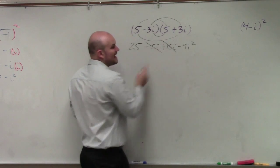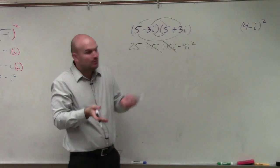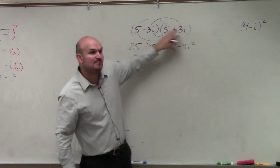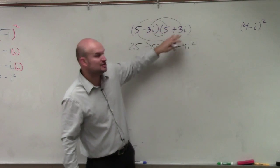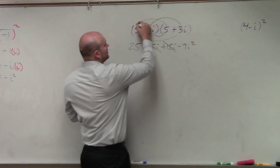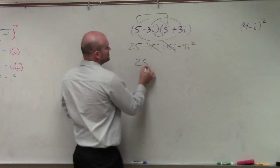So those add to zero. So in reality, when you see something like this, where it's exactly the same, but one's subtraction, one's addition, all you can simply do is multiply your first two terms, which is 25,